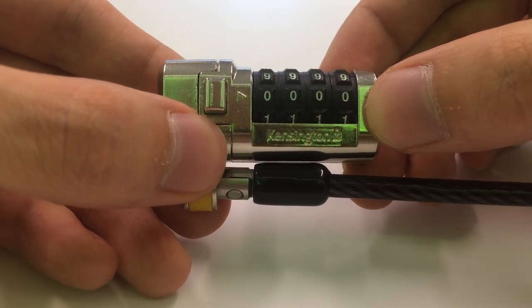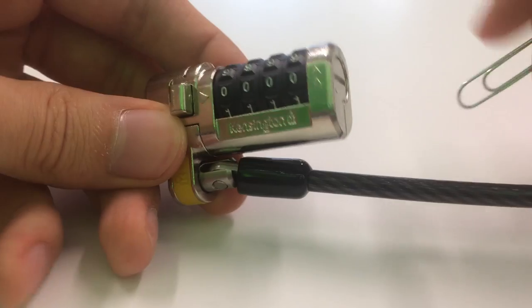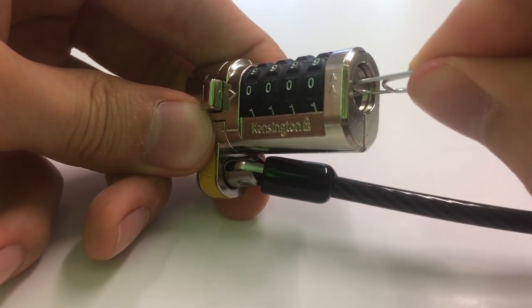The first step is to make sure all the dials are turned to 0. After that, insert a paper clip on the right side of the lock and turn it forwards.